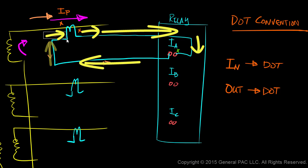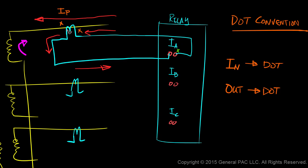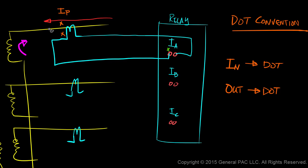What if we had current flowing in a different direction on our primary side? When current is flowing in this direction, we know the CT comes first and then we have the dot. So in this configuration, the current is flowing out of the dot. Current flows out of the dot on the primary side, which means current must flow into the dot on the secondary side, and it'll make a circulating path like this. Now, if our dot on the secondary side was over here, the same rule applies — current flows out of the dot on the primary side means current must flow into the dot on the secondary side.